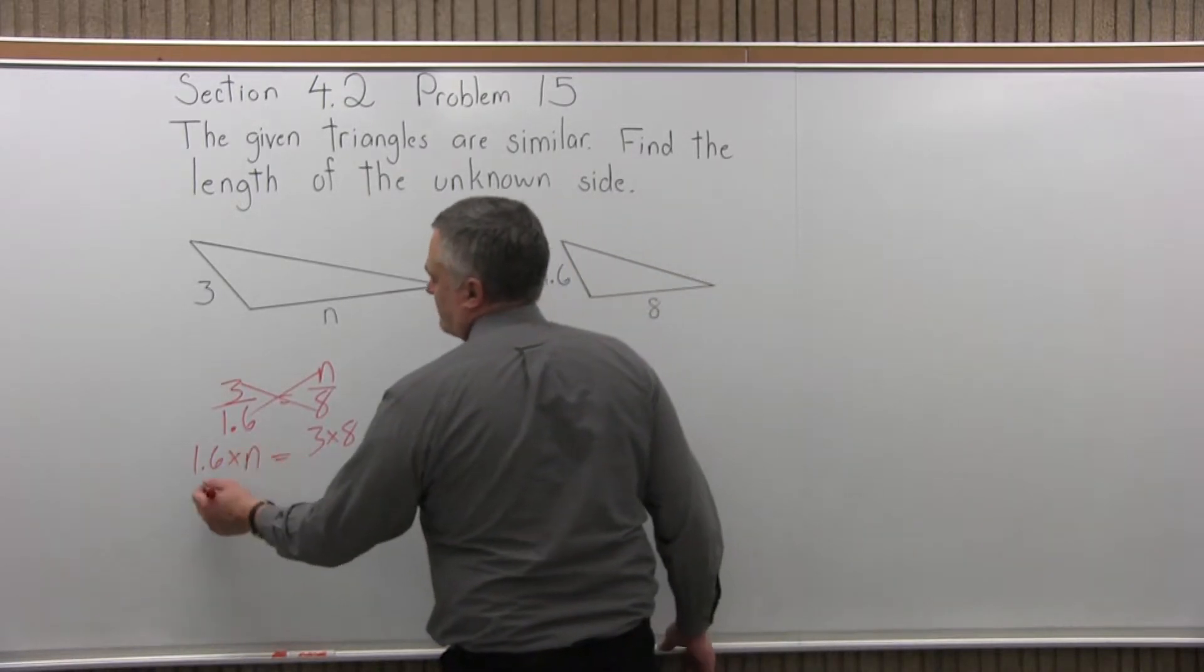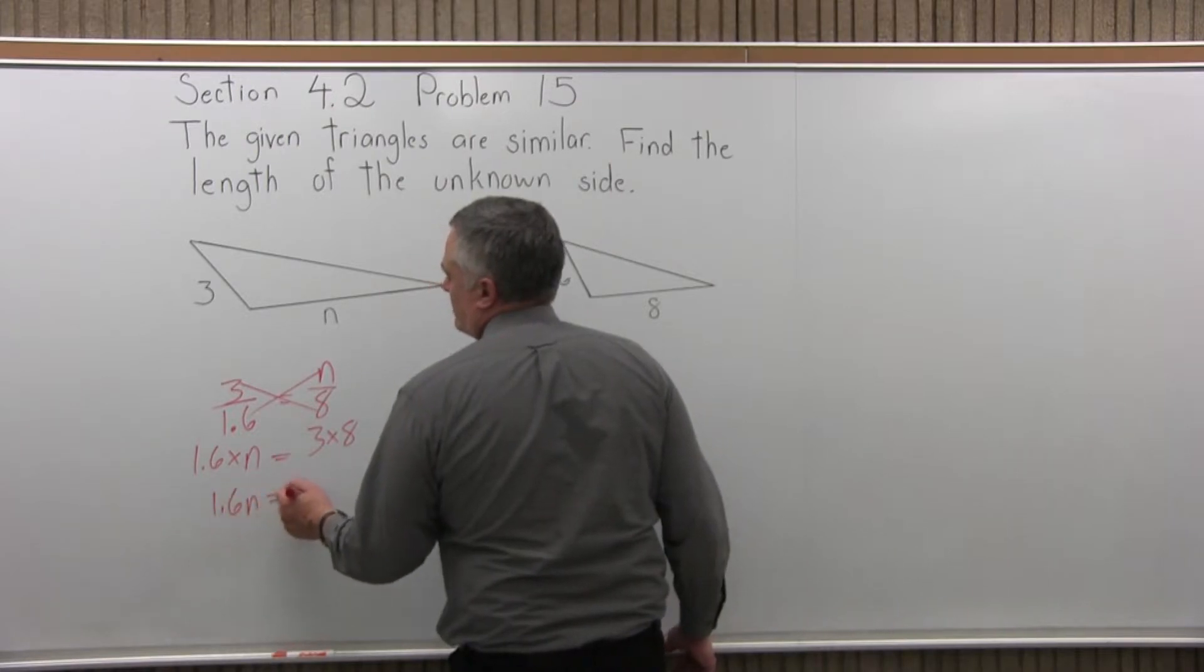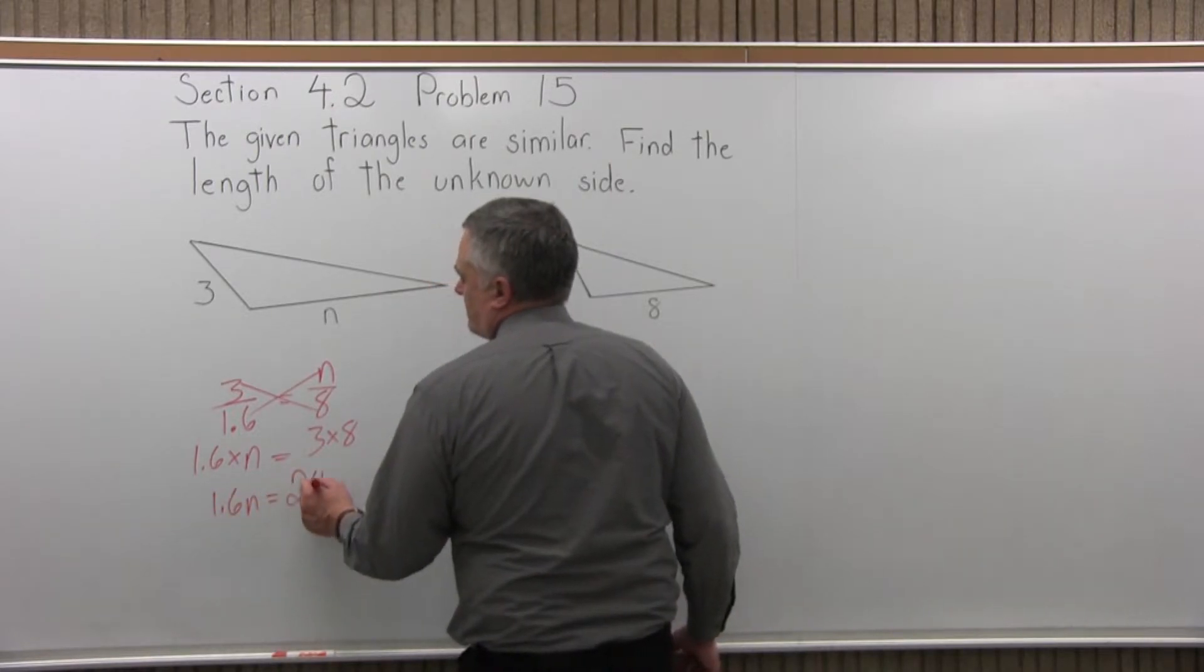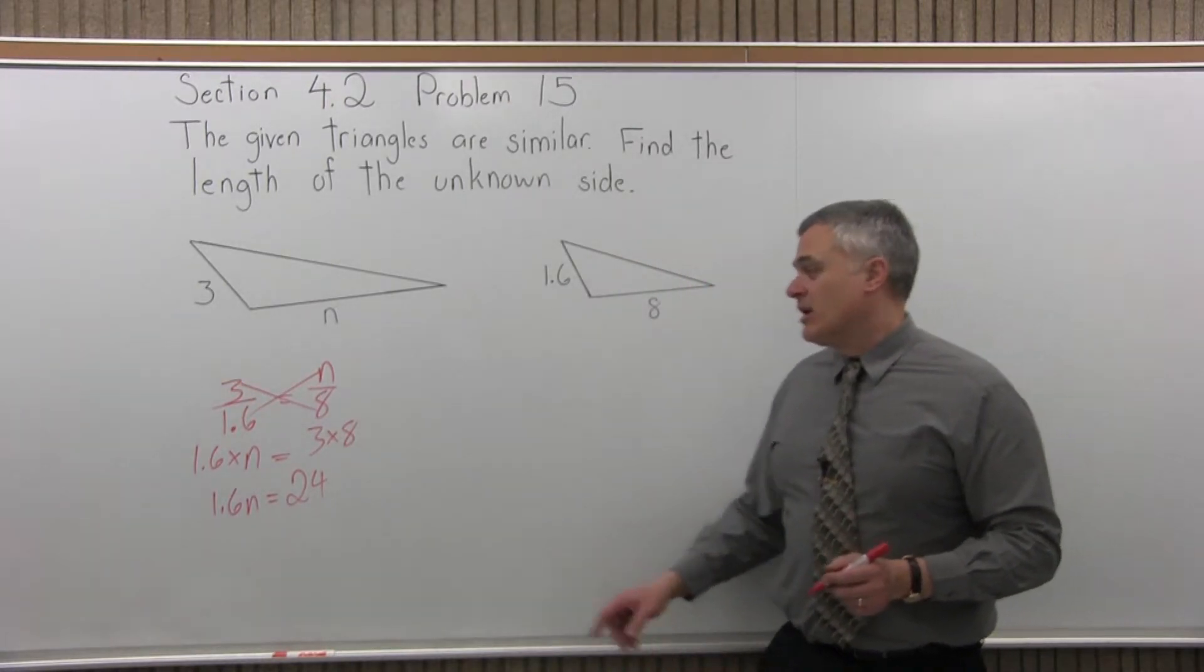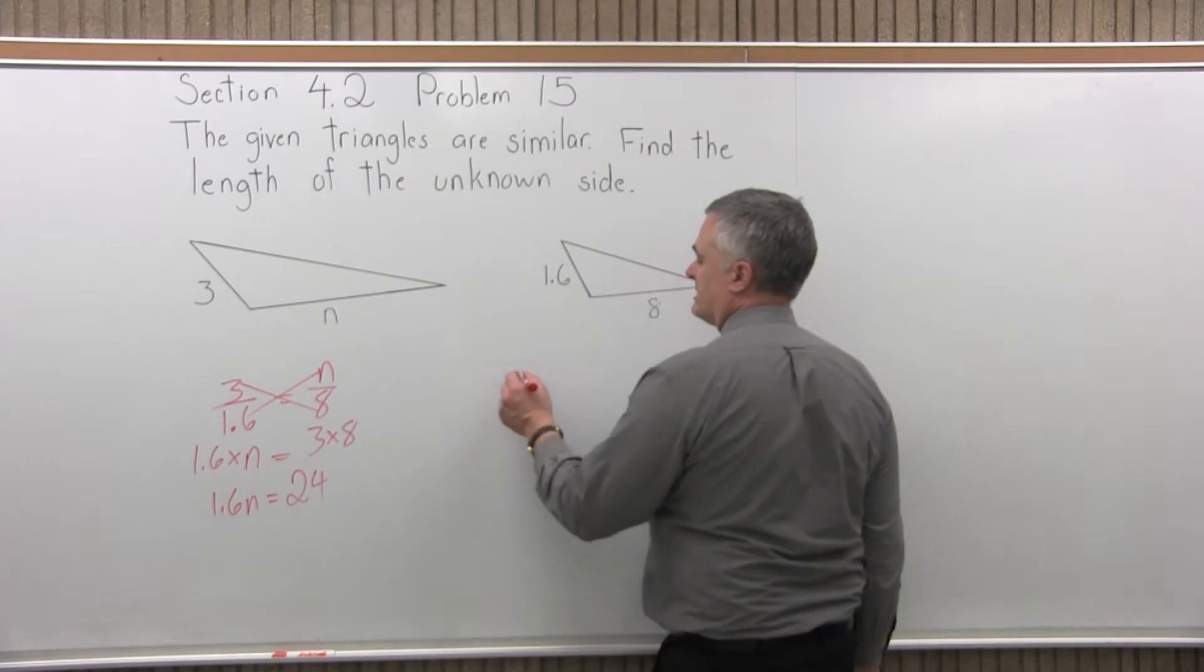So 1.6 times n we can just call 1.6n. 3 times 8 is 24. Now to solve for n, what we do is divide out the 1.6. We'll divide 24 divided by 1.6.